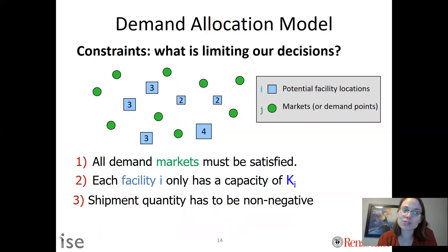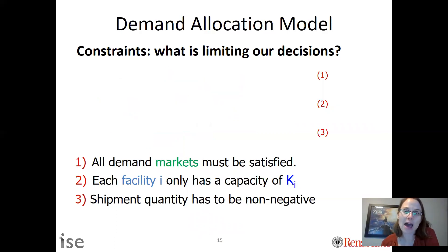In terms of constraints, what do we need? First of all, we need to know that all demand markets must be satisfied. Each market has some demand and we need to make sure it's satisfied. We also need to make sure that we don't use more capacity than we have. Each facility only has a capacity of Ki, and we can't ship non-negative things.